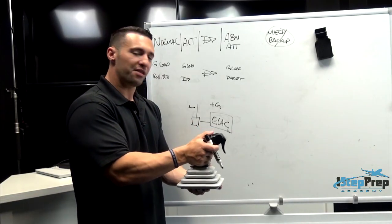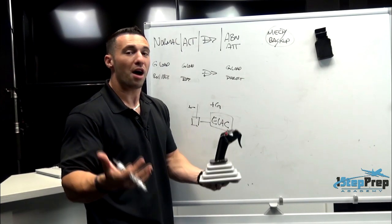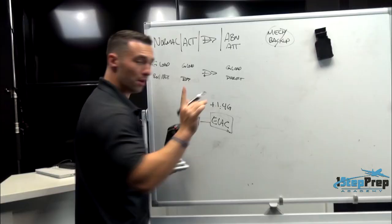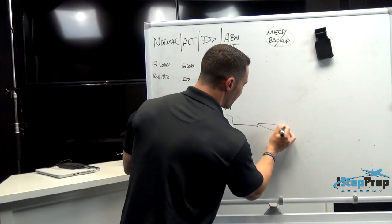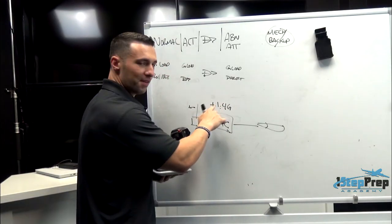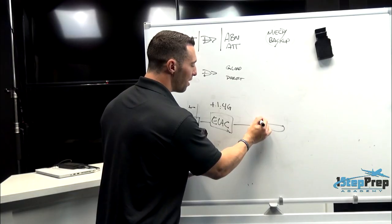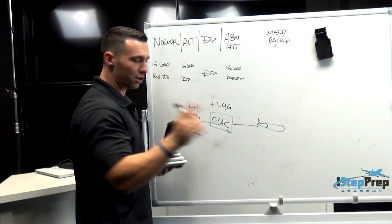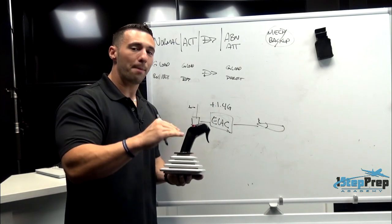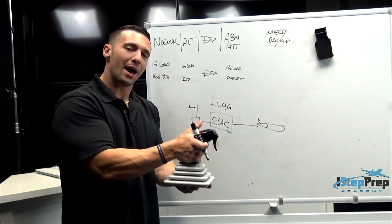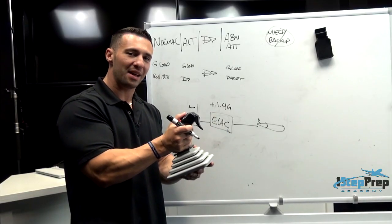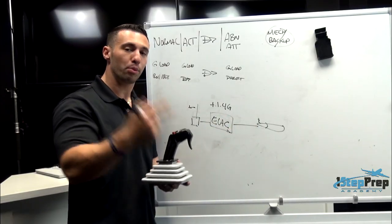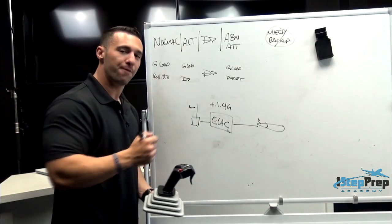So let's say you're commanding, based on your input, a positive 1.4 G. That aft input is interpreted as a positive 1.4 Gs. What positive G is interpreted as in the ELAC — and then commanded to the elevator — is nose-up deflection. The elevator deflects up, which in turn brings the nose up. As for how many Gs you're commanding at 1.4 Gs, that may or may not be a proportionate displacement of the elevator surface to your side stick position.